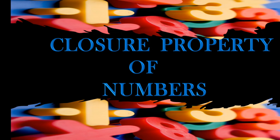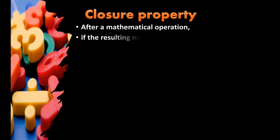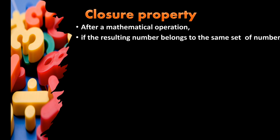Hello students, let's learn today about the closure property of numbers. What do we mean by closure property? Closure means it is closed. After a mathematical operation — whether it is addition, subtraction, multiplication, or division — if the resulting number belongs to the same set of numbers, it is said to be closed under that particular operation.